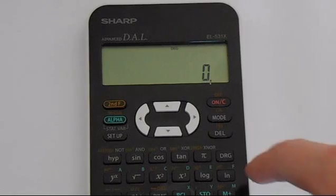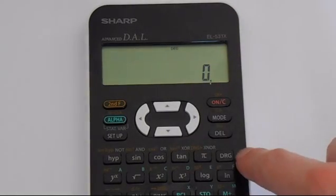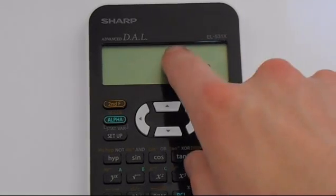To start with I'll show you how you can change the mode of the calculator between degrees, radians and gradians. Simply press this button that says DRG in the corner.